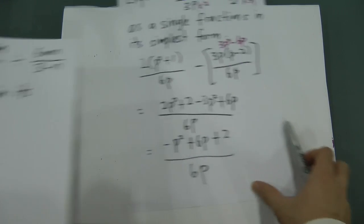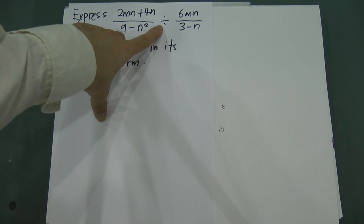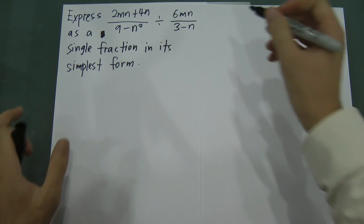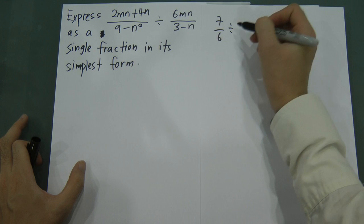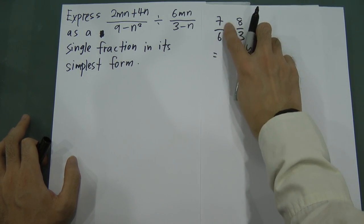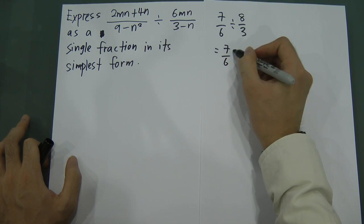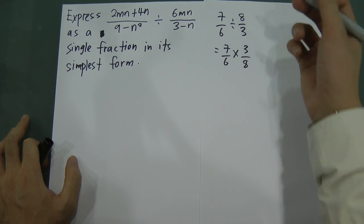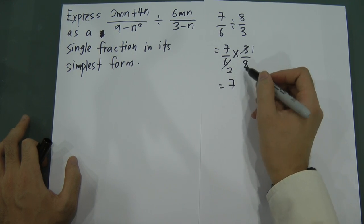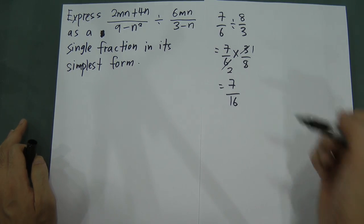The last example is a bit different because it involves division. When you see a fraction divided by another fraction, you change the division to multiplication and flip the second fraction. For example, 7 over 6 divided by 8 over 3 becomes 7 over 6 times 3 over 8. Simplify 3 and 6 to get 7 over 16.